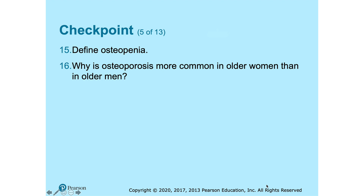Second: why is osteoporosis more common in older women than in older men? Osteoporosis is more common in older women because after menopause, levels of estrogens — sex hormones that play an important role in moving calcium into bones — decrease dramatically, making it difficult to replace calcium lost from bones due to normal aging. In men, decreases in sex hormones or androgens occur at later ages, so loss of bone matrix material does not start until later in life.